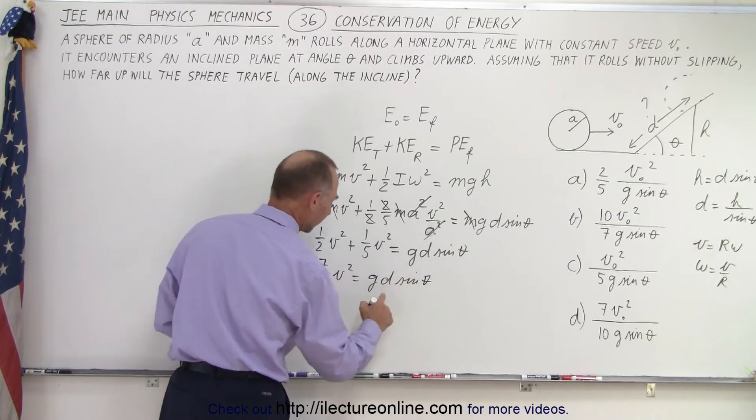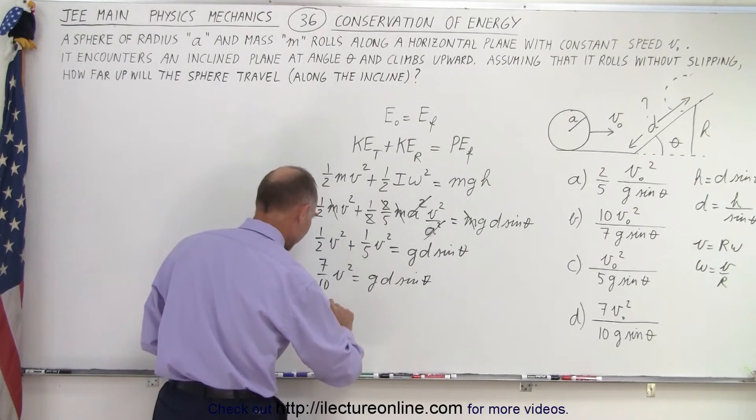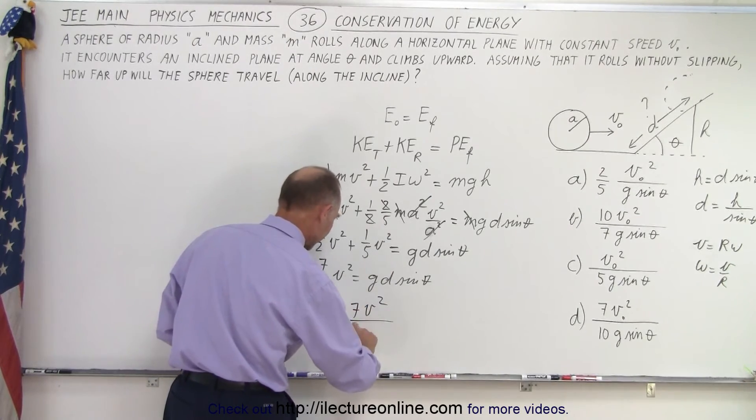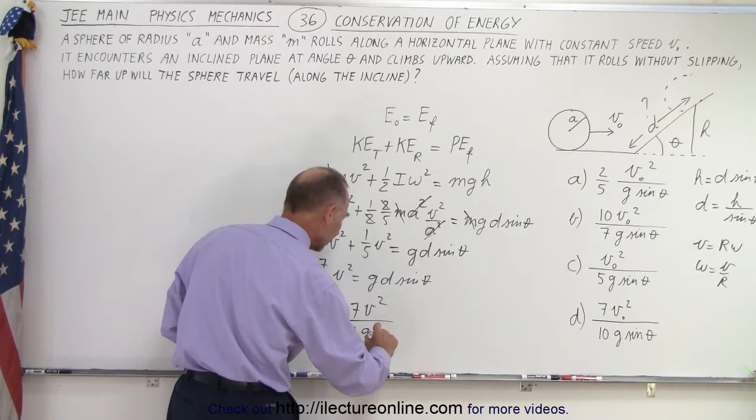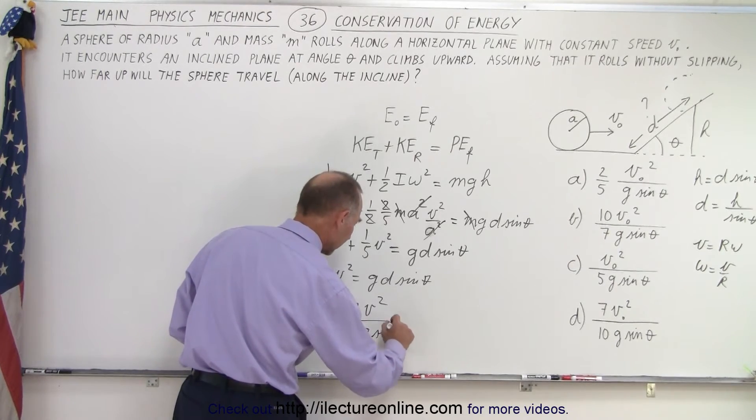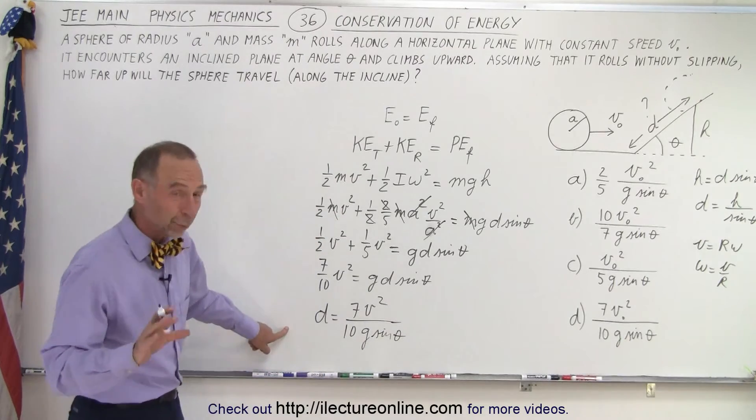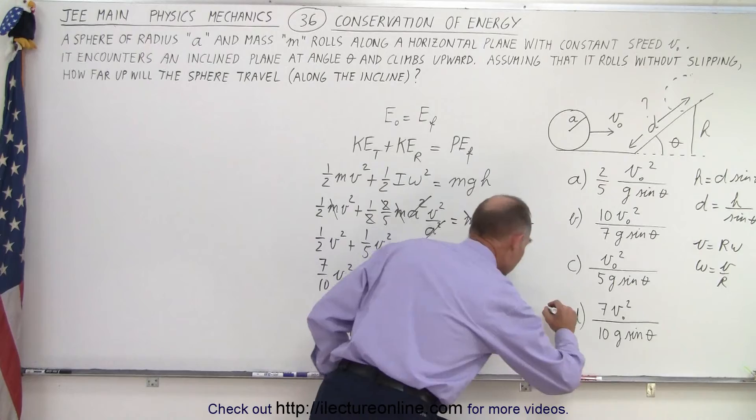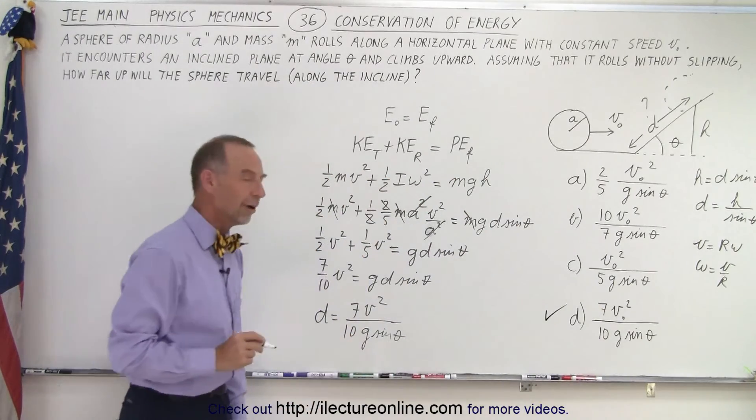And finally, solving for d, we can say that d is equal to 7v squared divided by 10g times the sine of theta. And now hopefully that's one of the answers, and it looks like it's answer d. So that is the correct answer out of the four.